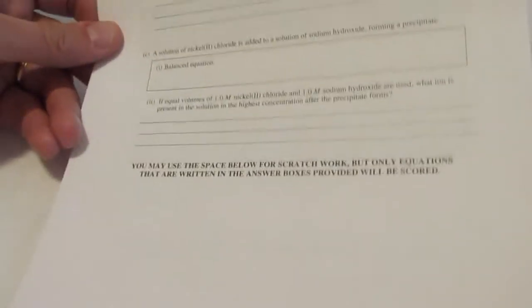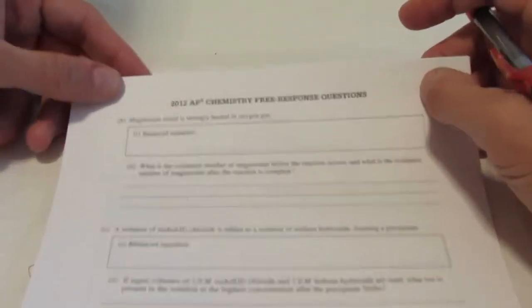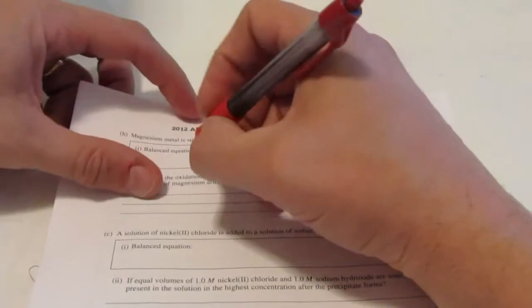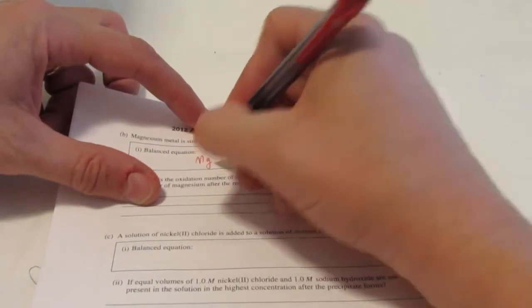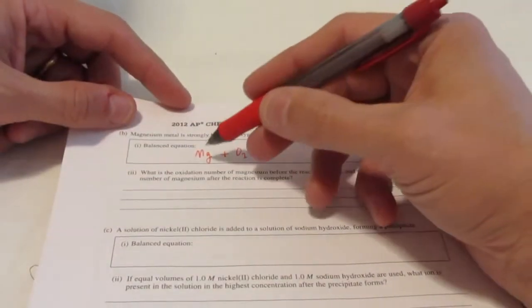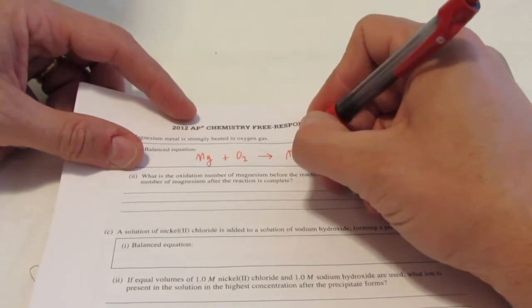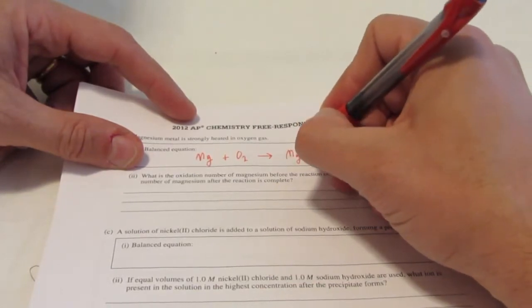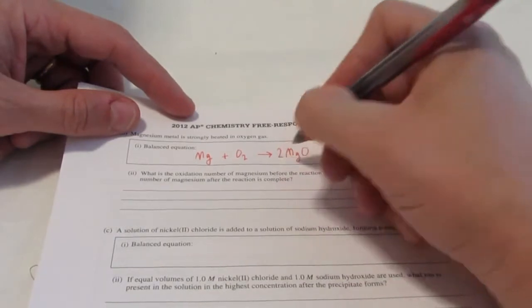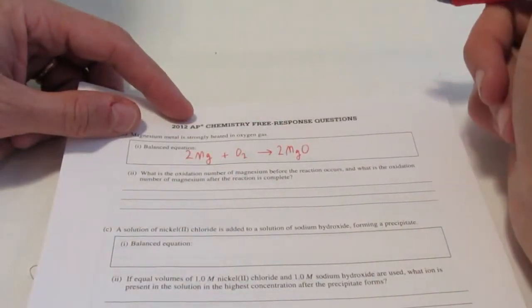Let's take a look at the next question from the 2012 equation section. Here we have magnesium metal is strongly heated in oxygen gas. This is a nice synthesis reaction. Magnesium, Mg, oxygen gas of course is diatomic. So when these two react, we're going to have magnesium oxide. Magnesium is two plus, oxygen is two negative. So we form MgO. Of course, that's not balanced. So I'll put a two here, and a two there, and away we go. I've got my four points.